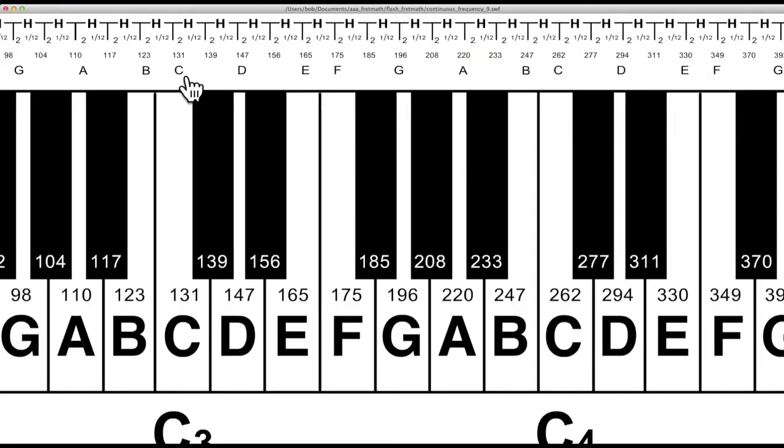Each key on the piano, when you include the black keys, is separated by a half tone or semitone. That is two to the one twelfth. And then you make the major scale out of that. And I will show you how that is done next.